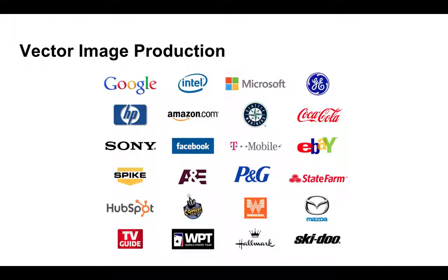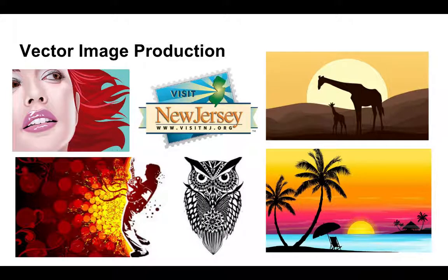In the vector design world, images made from vector file types are used for really just about anything. A lot of companies make their logos out of vector images so that they can be scaled down for websites, hats, or t-shirts, or scaled up to be on the side of a truck or jet fighter, because vector images are so scalable. There are also various signs that are typically vector, but there's usually a stylistic approach to them — they're not really photographs, there's always a bold line, sometimes shading.